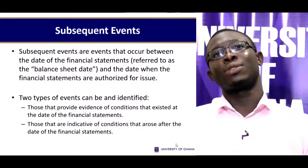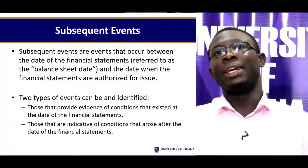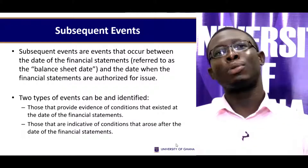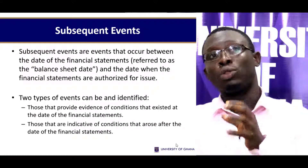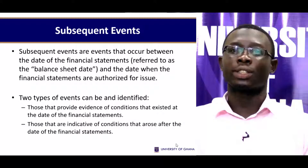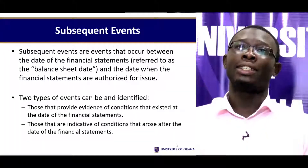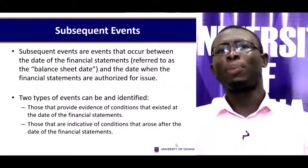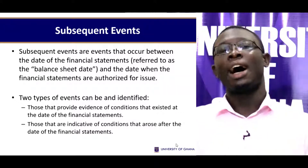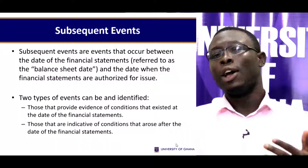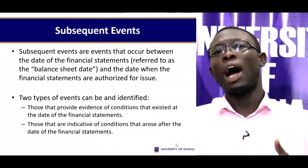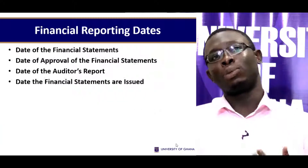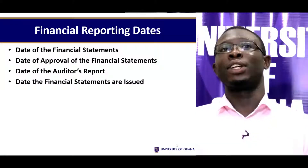Now let's turn our attention to subsequent events — things that happen after auditing. Subsequent events occur between the date of the financial statement, referred to as the balance sheet date, and the date when financial statements are authorised for use. There are two main types of events: those that provide evidence of conditions that existed at the date of the financial statement, and those that are indicative of conditions that arose after the date of the financial statement.